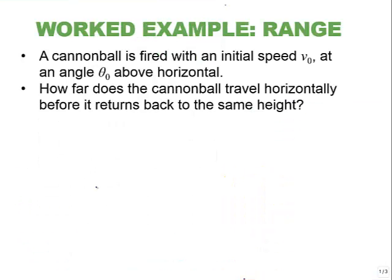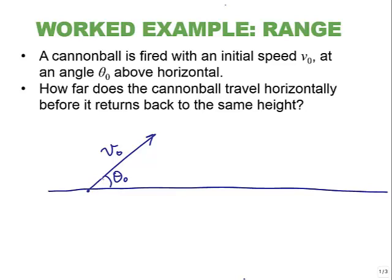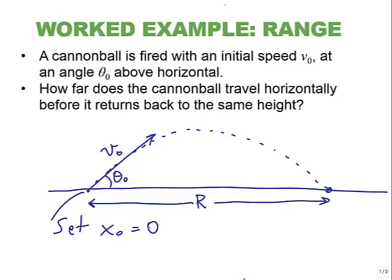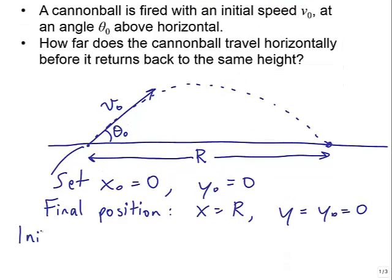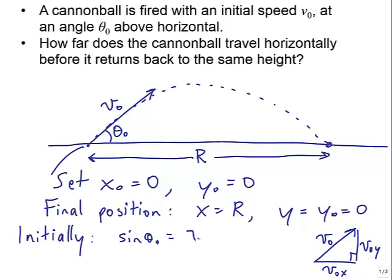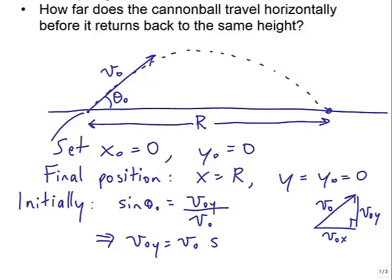Okay, let's do a worked example on range. A cannonball is fired with an initial speed v sub zero at an angle theta sub zero above horizontal. How far does the cannonball travel horizontally before it returns back to the same height? Okay, so we can draw the initial velocity right there. There's horizontal, and there's your angle theta sub zero above horizontal. There's the trajectory. We want to find the range, which I'm going to call R, the distance it travels horizontally. We set the initial position to be zero, x sub zero zero, y sub zero zero. It starts at the origin. The final position will be when it goes the distance R, the range, and actually the final y position is equal to the initial, which is zero. And initially, sine, if we look at the initial velocity and the little right angle triangle, sine theta sub zero is v sub zero y over v sub zero. We can solve for the y component of the initial velocity is v zero sine theta, and the horizontal component is v zero cos theta.